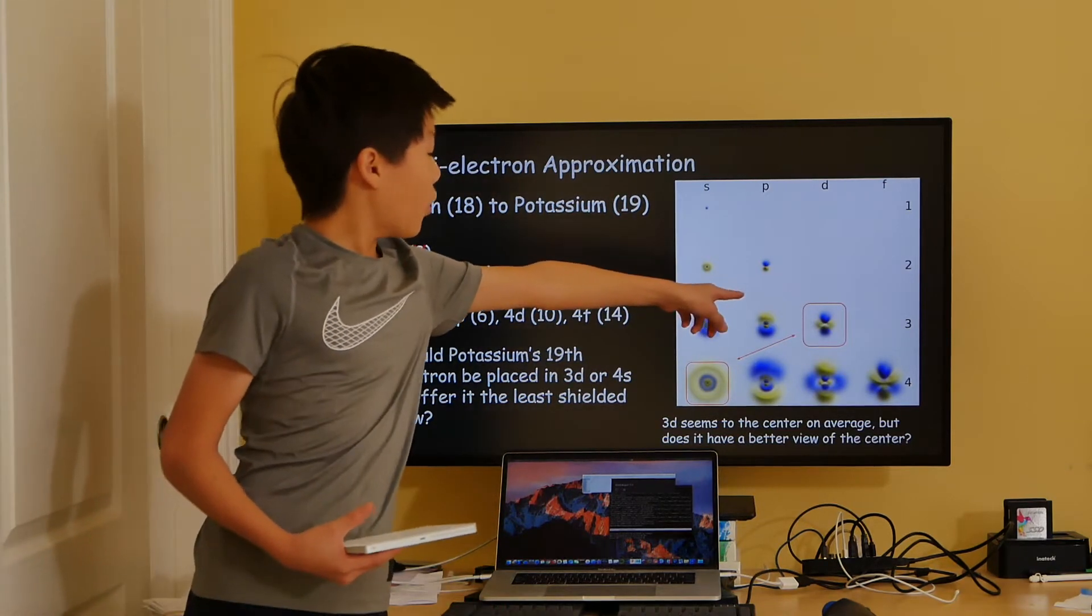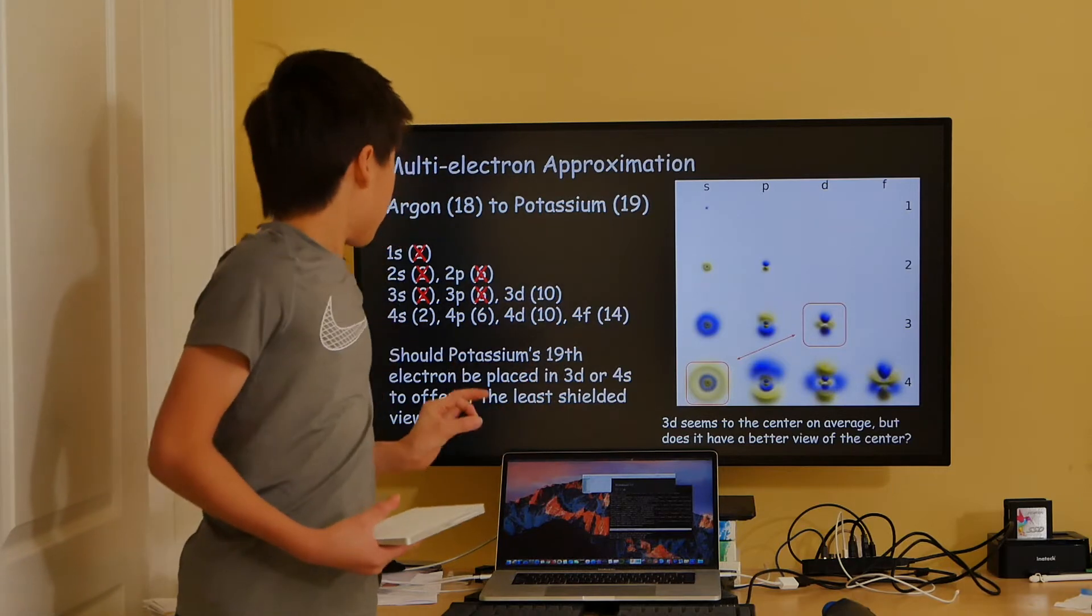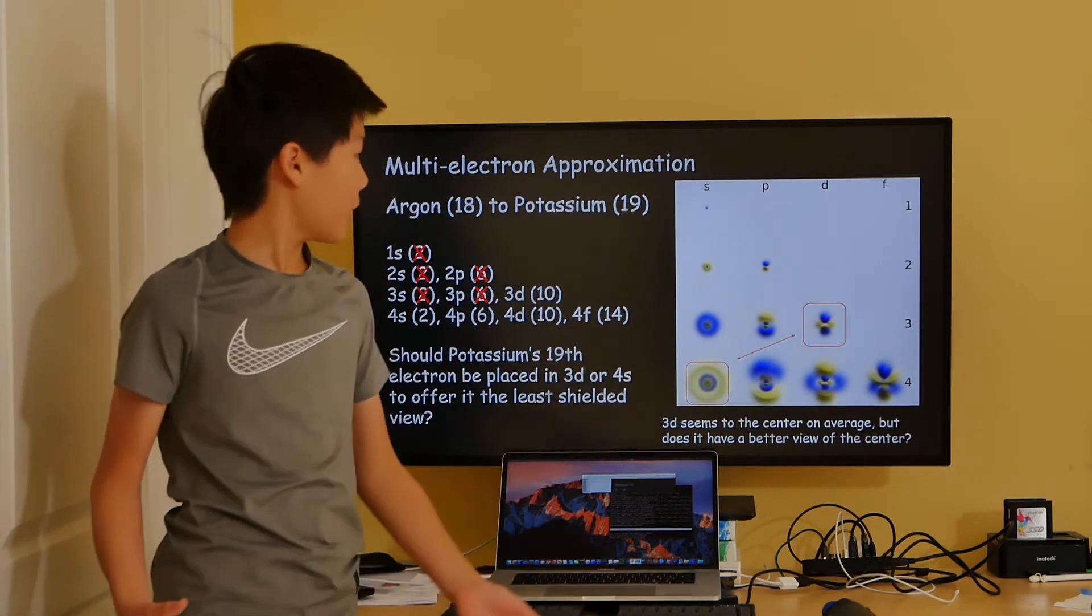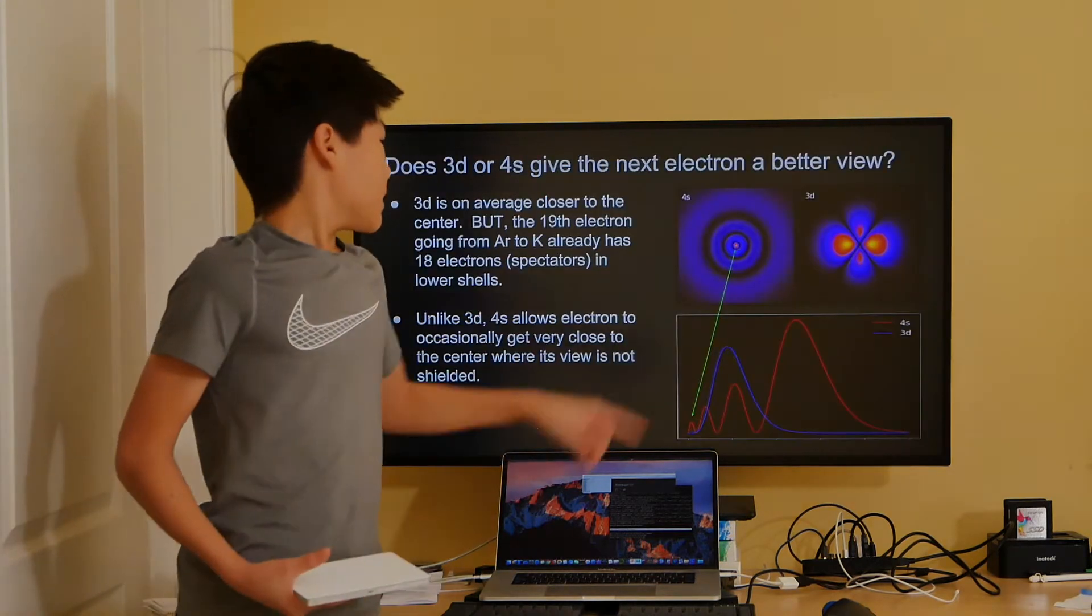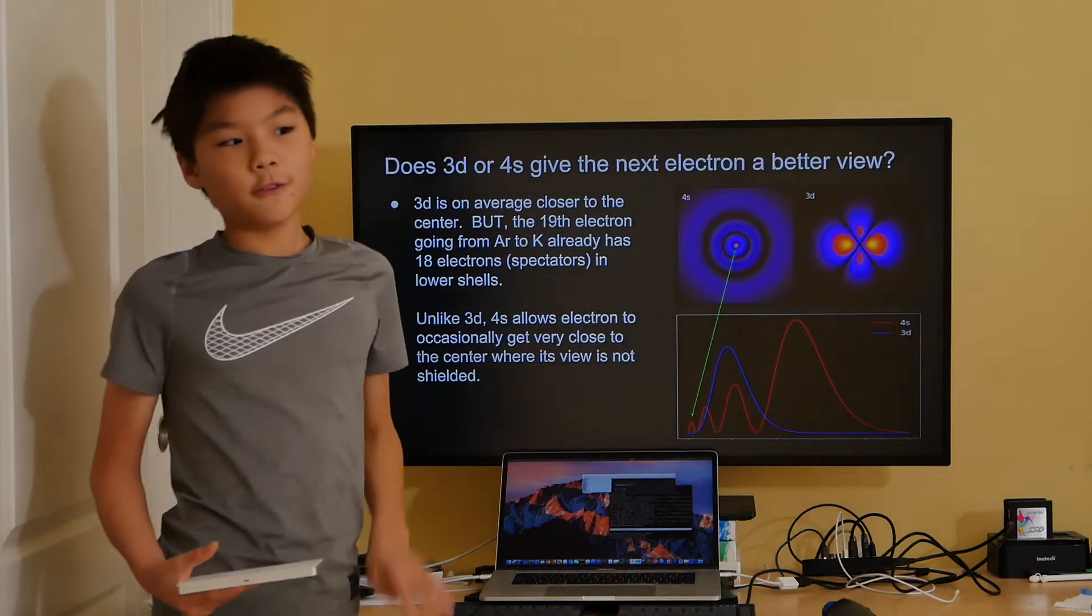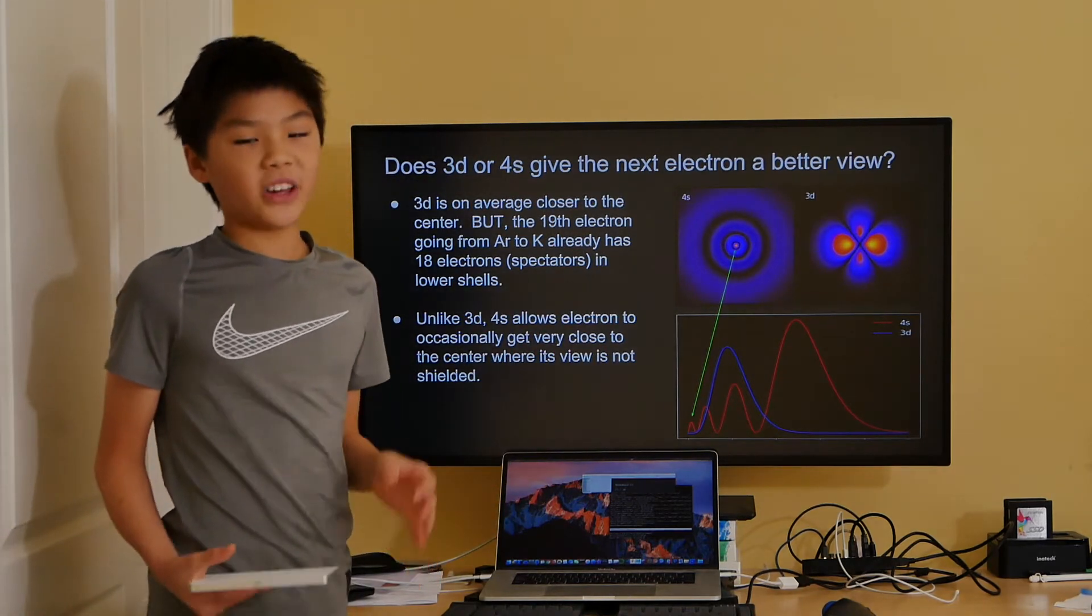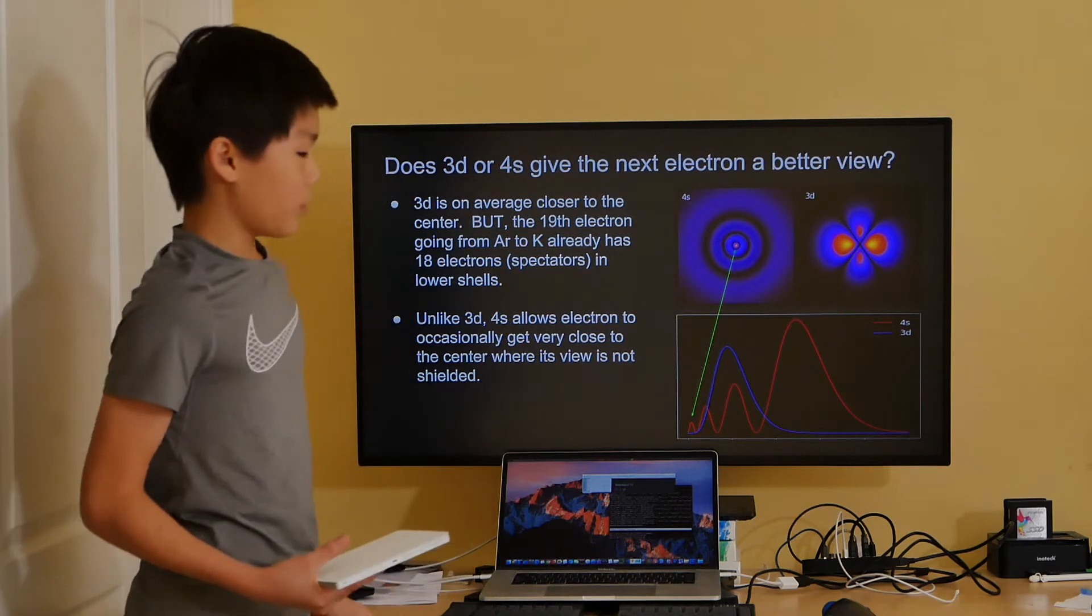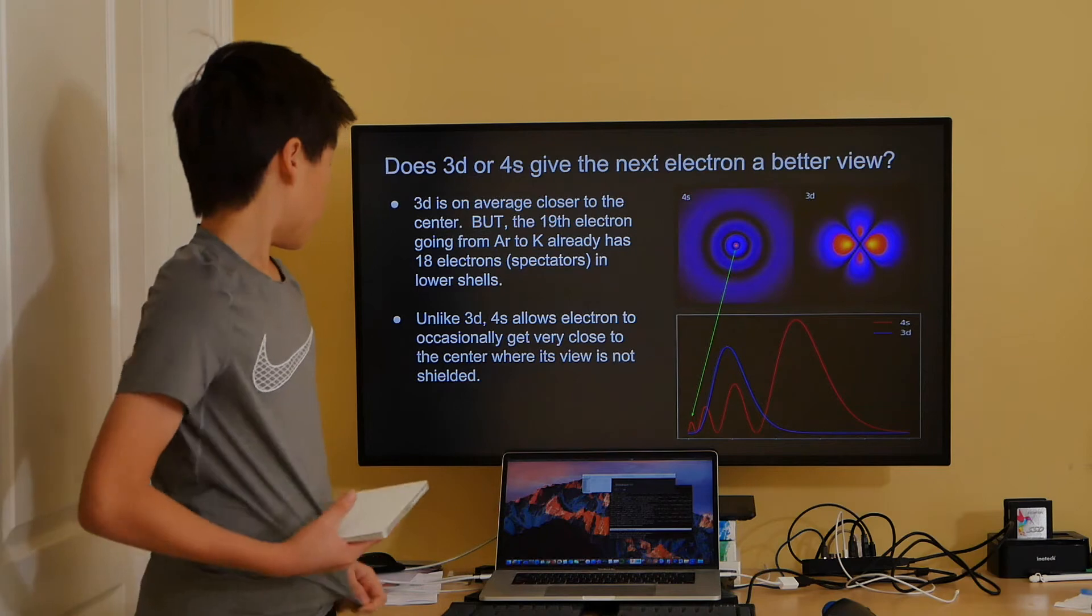The 3d orbital is overall closer to the center on average, while the 4s orbital is farther away. But remember that there are already 18 electrons blocking the view of the 19th electron, regardless of whether it is placed in the 3d or the 4s orbitals. To take a closer look, my dad sawed these orbitals in half. The 3d orbital consists of 4 lobes and is indeed overall closer to the center, while the 4s orbital consists of 4 concentric spherical shells. But notice that the 4s orbital sometimes allows electrons to get into the innermost shell, so that it can have an unblocked view of the center. In contrast, the 3d does not allow electrons to get as close as they can as the 4s orbital.